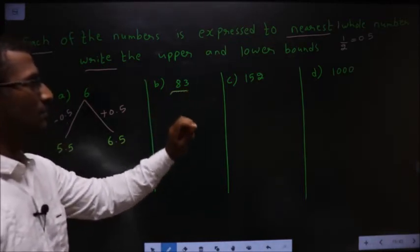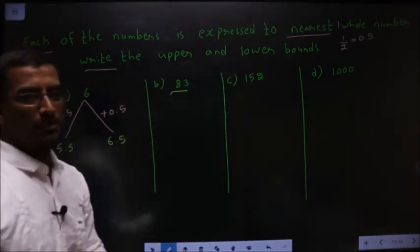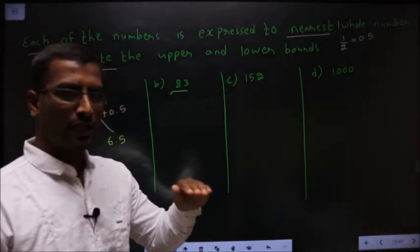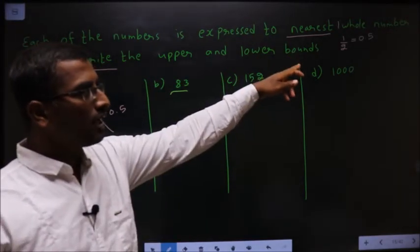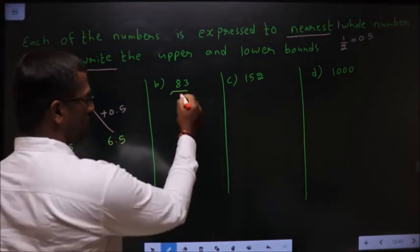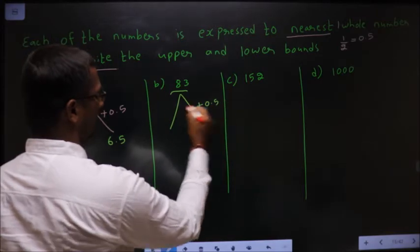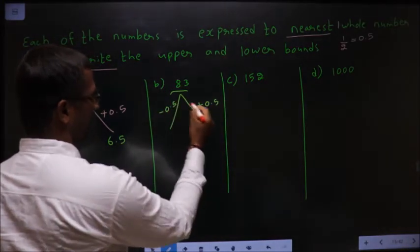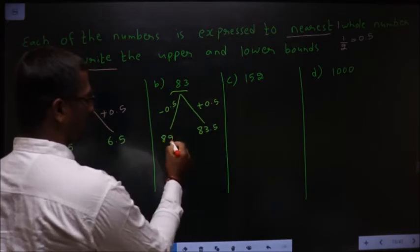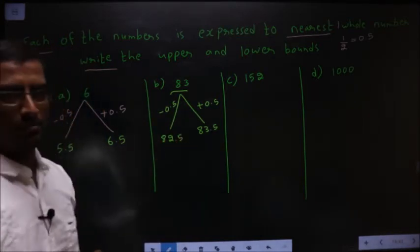Even 83 is also expressed to the nearest whole number. To whatever it is expressed, you should do half of that. So when we do half, we get 0.5. So that you should add and subtract. So here we get 83.5 and here we get 82.5. So this is the lower bound and this is the upper bound.